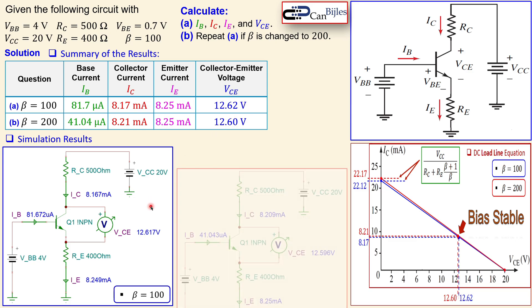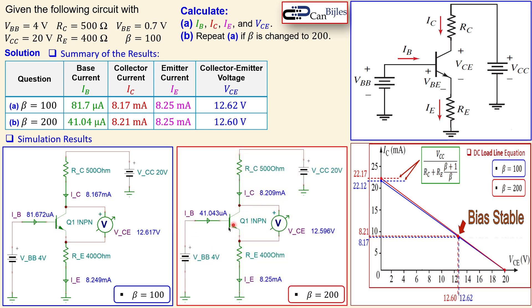For the simulation with beta equal to 200, the base current is approximately 41.04 microamps, the collector current is approximately 8.21 milliamps, VCE is approximately 12.60 volts, and the emitter current is exactly 8.25 milliamps. This confirms that a 100 percent change in beta produces very little change in IC and VCE — demonstrating the bias-stable design.